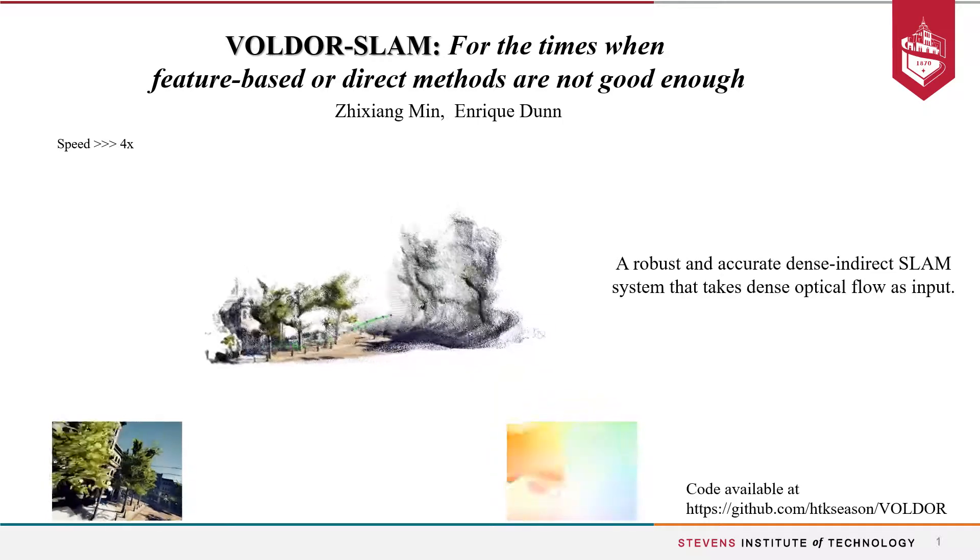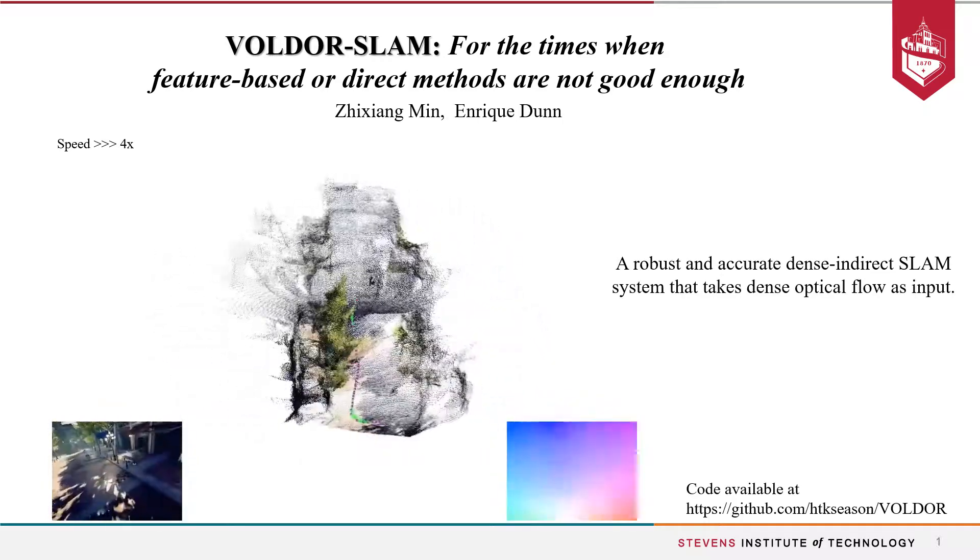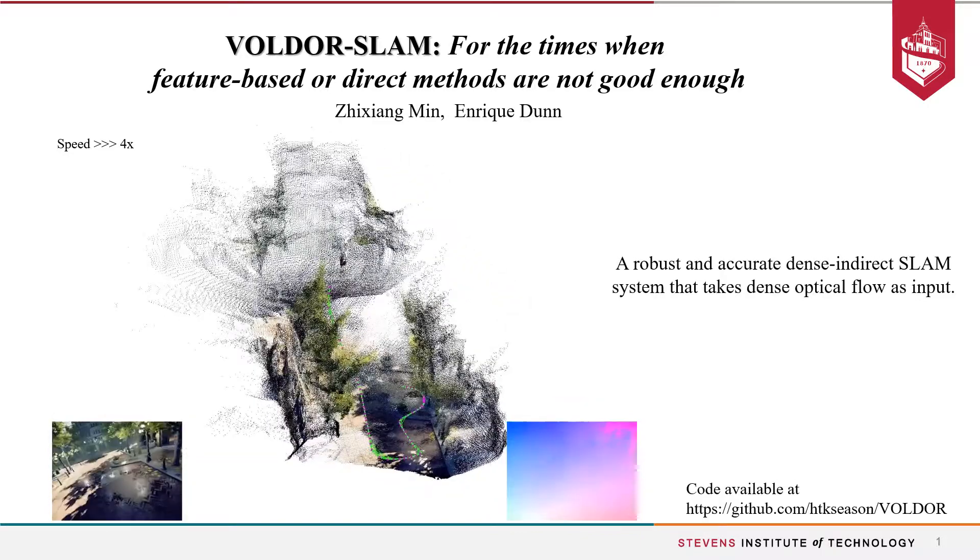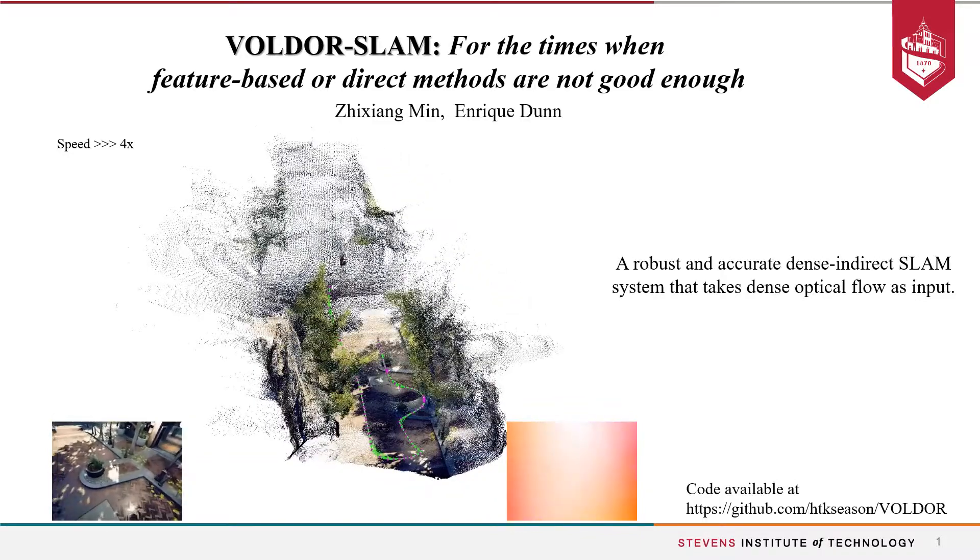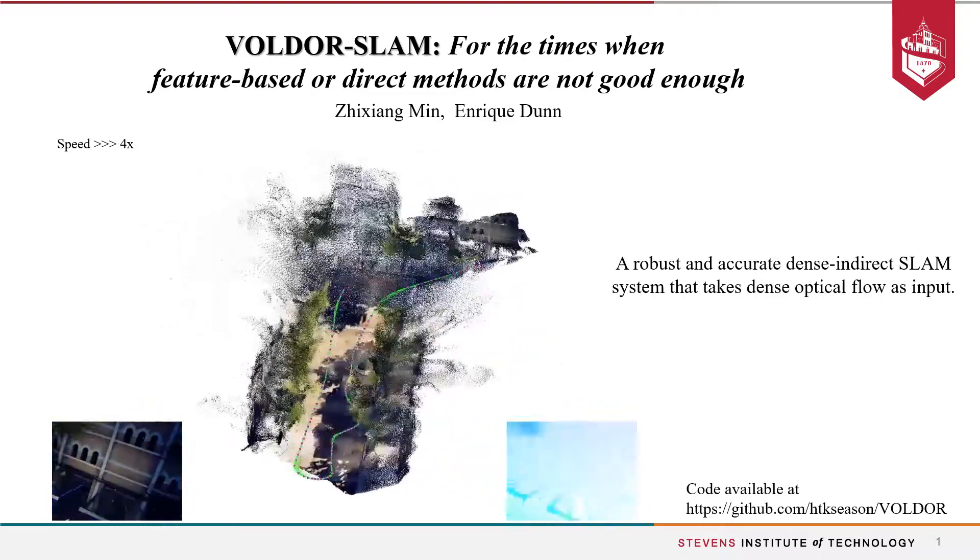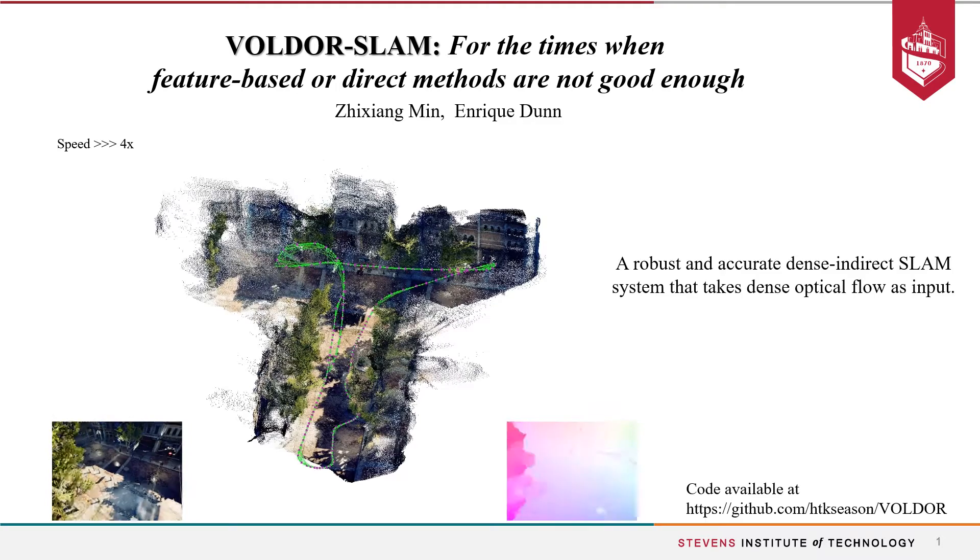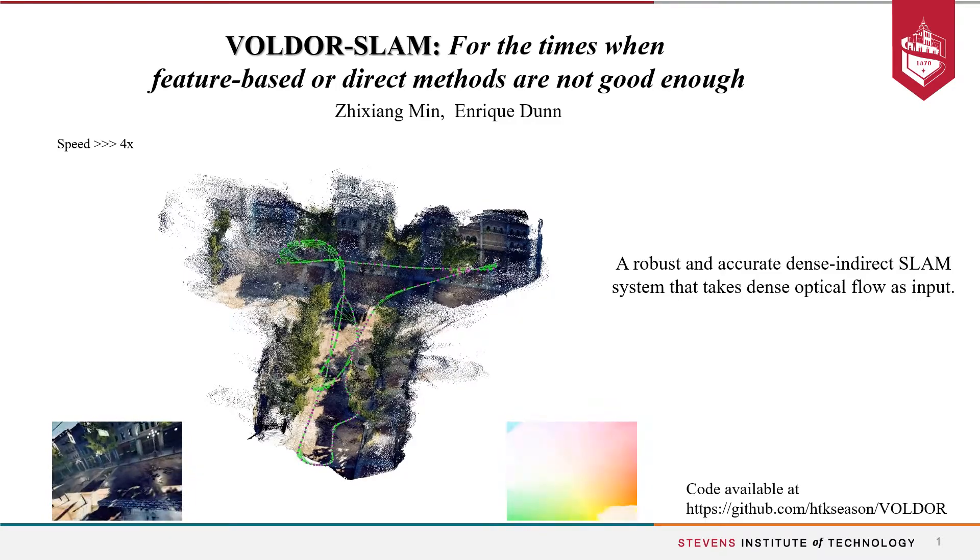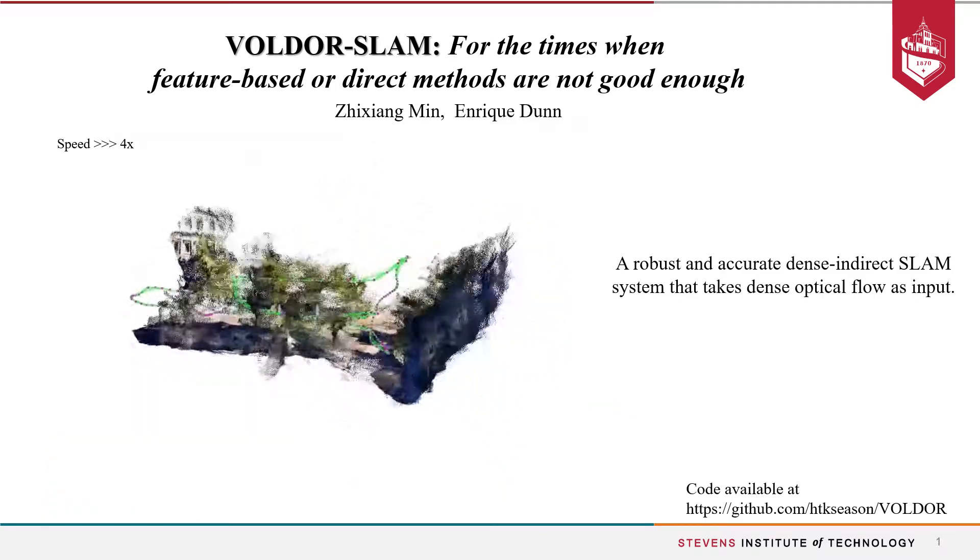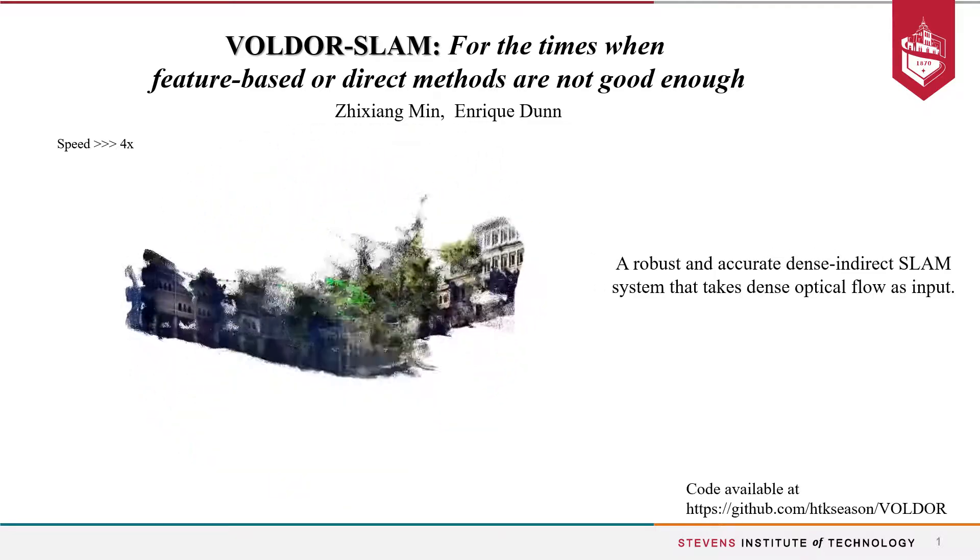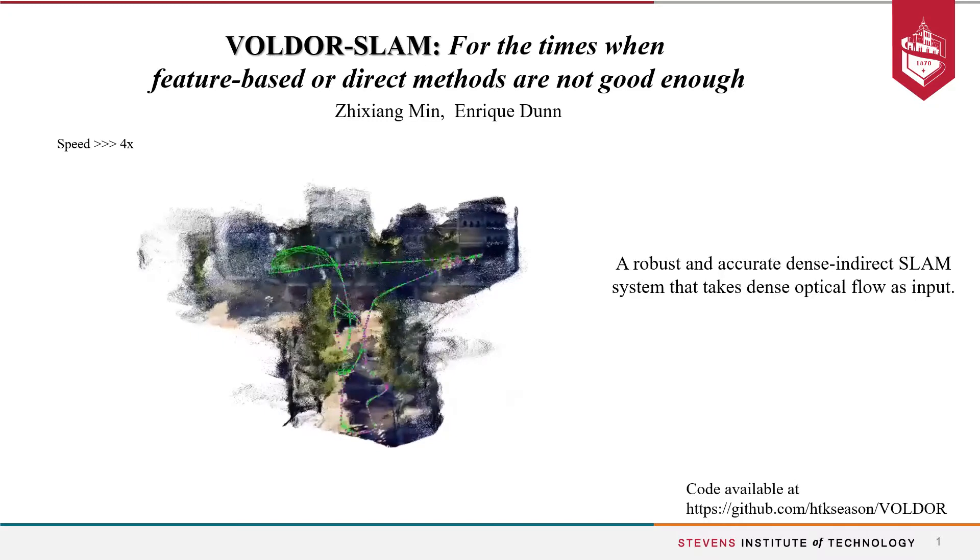In this work, we propose VOLDOR-SLAM, a dense indirect SLAM system that takes dense optical flows as input. Our method reconstructs realistic dense structures from monocular, stereo, or RGB-D input in real-time on a single gaming GPU device. It benefits from recent advances in dense optical flow methods and achieves very good accuracy and robustness. Check out our open-source implementation from the link at the corner.